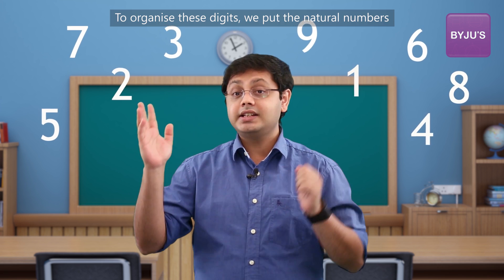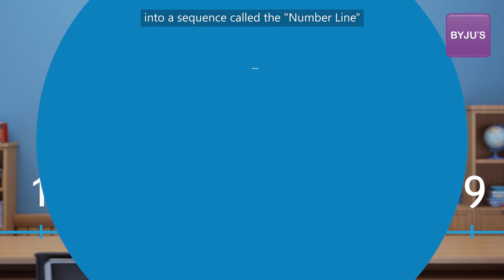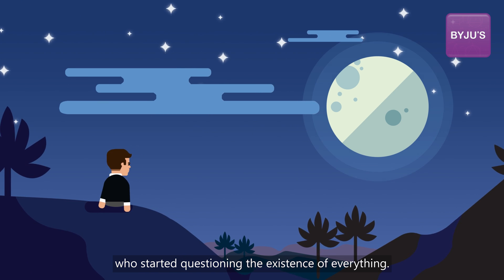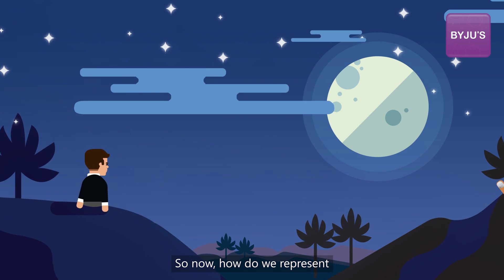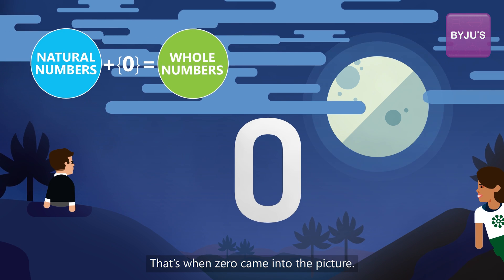To organize these digits, we put the natural numbers into a sequence called the number line. Back then, there were creative pioneers who started questioning the existence of everything. So how do we represent something that does not exist? That's when zero came into the picture.